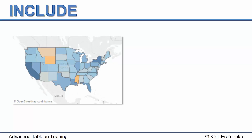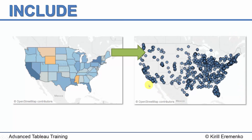We talked about the include level of detail calculation. We started at the level of granularity of state — and it doesn't have to be geographical dimensions, it can be any type, but in our case they are geographical. We started at the state level, then included a new dimension which was city, going down to a more granular level. We aggregated our items in orders for every city, summing up all of the profit for each city.